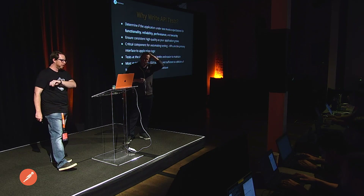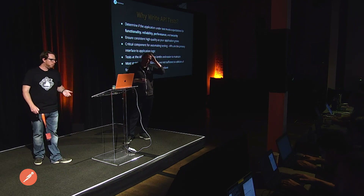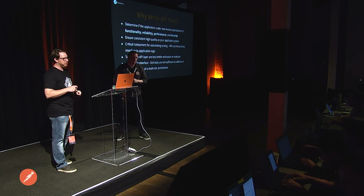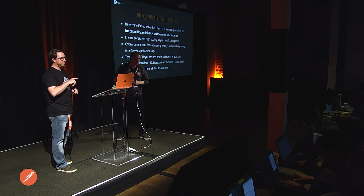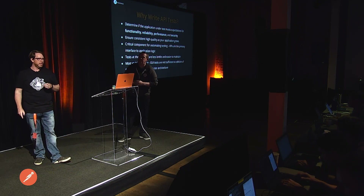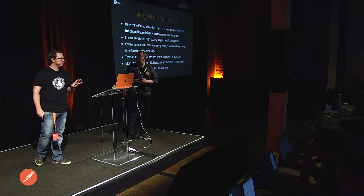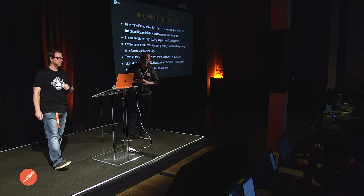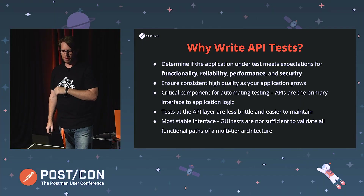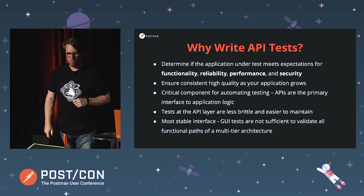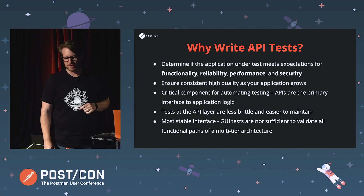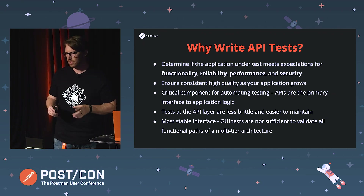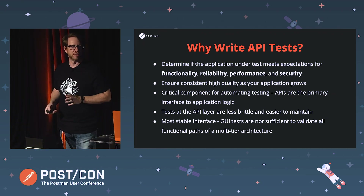So why write API tests? We're checking the application to make sure that it meets the criteria such as functionality, reliability, performance, and security, things along those lines. As a result, we ensure that the application meets the quality standards we set out for our APIs. One of the main benefits of API testing is that it tends to be more robust and easier than other types of testing, such as GUI testing and things like that.